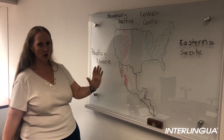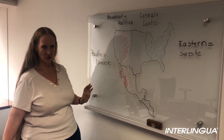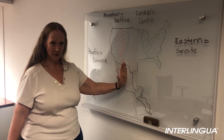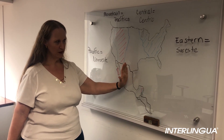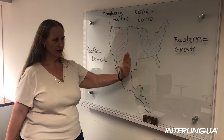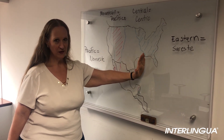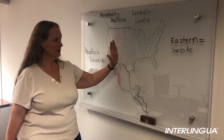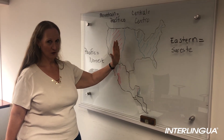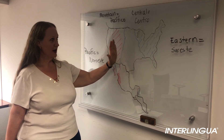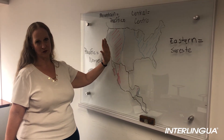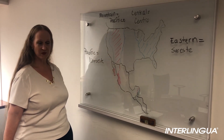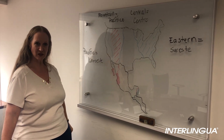So these are the four different time zones. If you live in the central part of the country, here it's one hour later. And here an hour earlier and two hours earlier. So these are the names of the time zones in English.